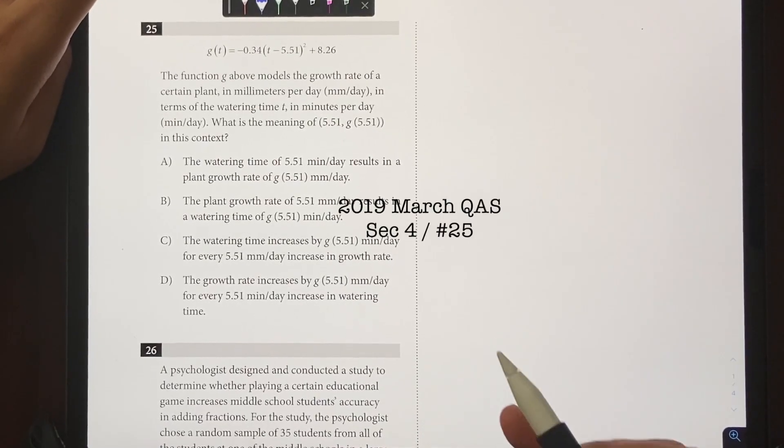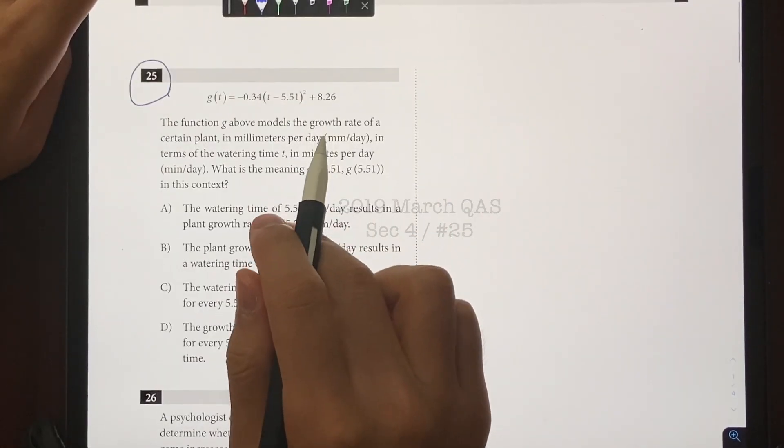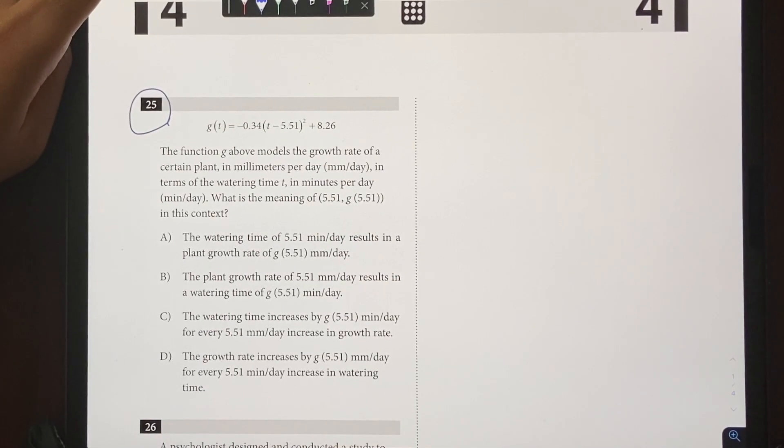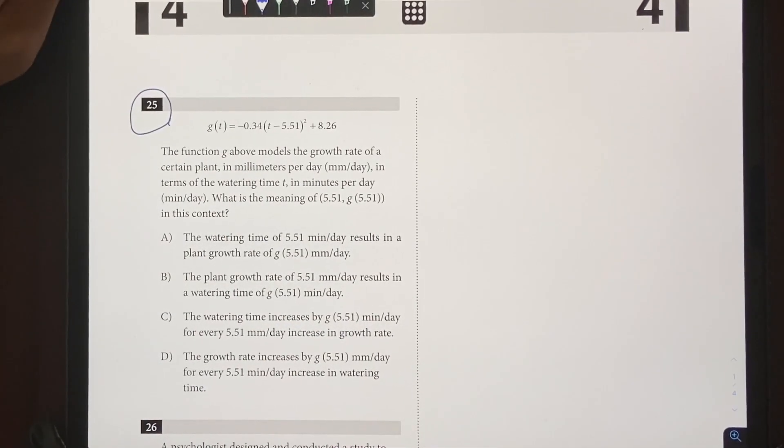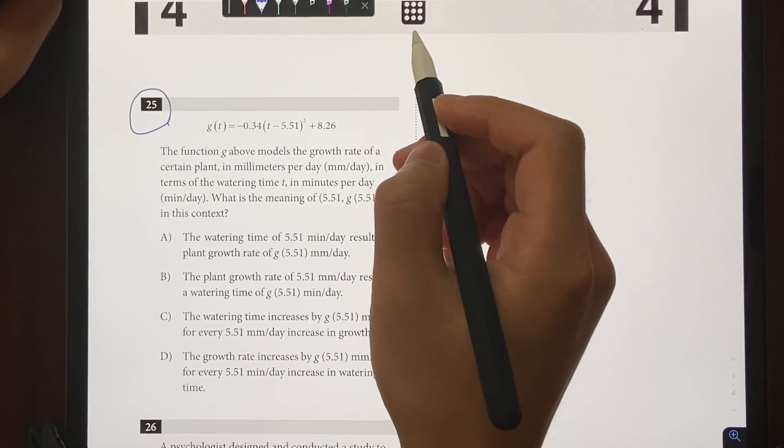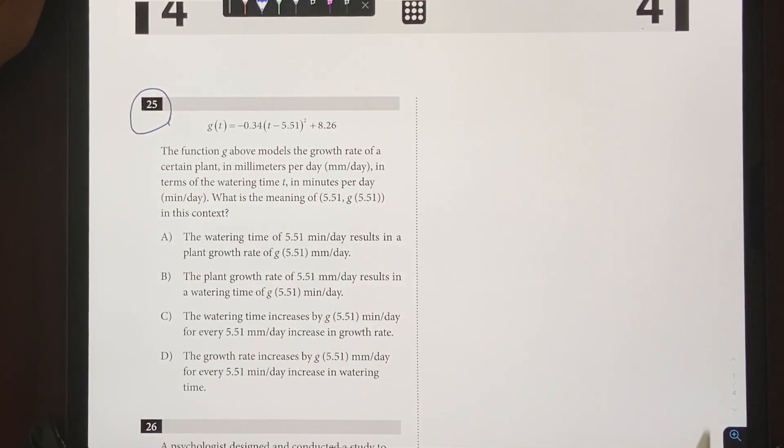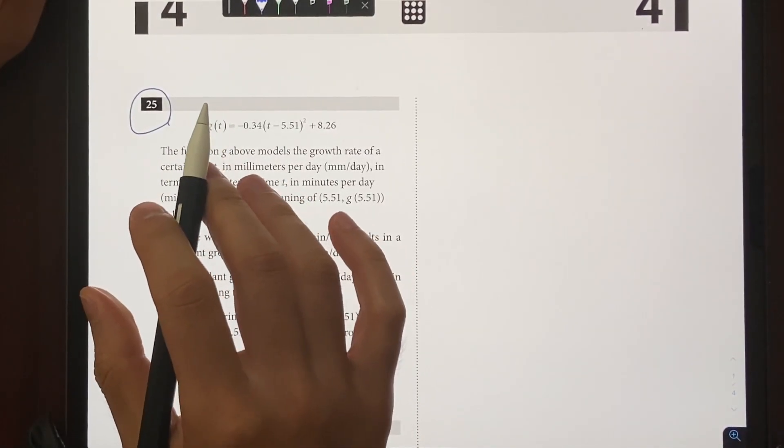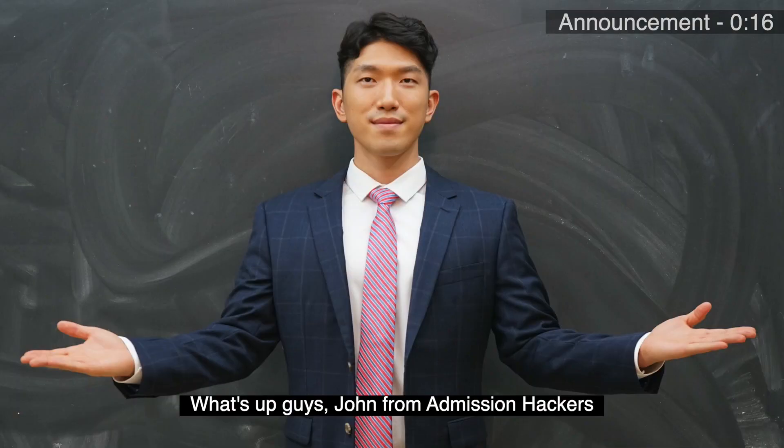What's going on guys, today we're going to go over a complicated function interpretation question, which is number 25 from section 4, supposedly a tough question given that it's one of the last few questions. However, it's actually a really simple question that you can solve without a calculator or even doing any math on paper. So as always, I'll show you the quick way to get the answer without doing any work, and then explain the reasoning behind it so you can understand it and use it on your future exams.